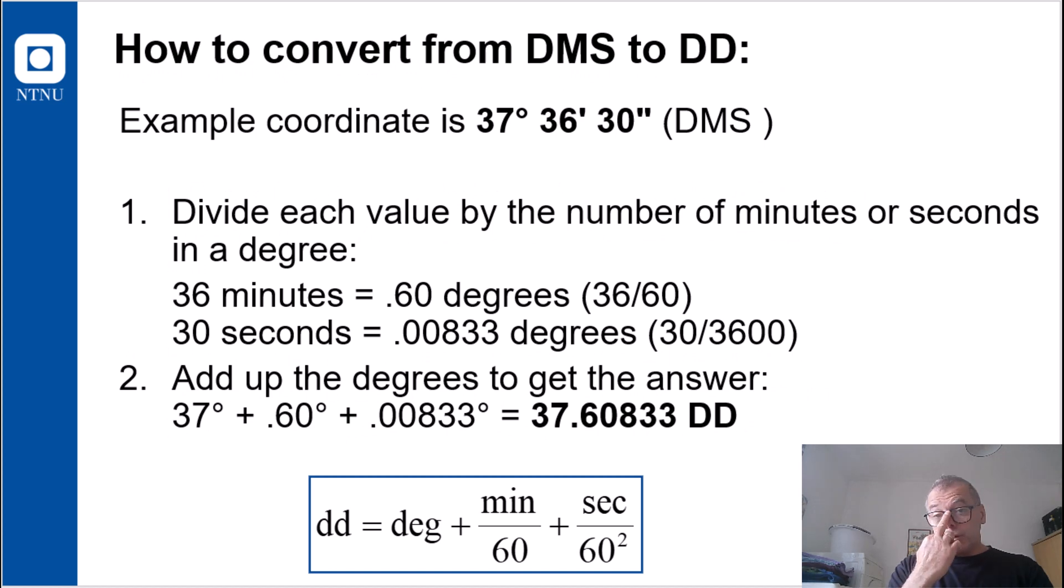So then how to convert from degrees minute second to decimal degrees? That is something the computer most often do for you, but it may also be needed if you need to register points from a non-digital source. We have an example here of 37 degrees, 36 minutes and 30 seconds. That's in the degree minute second format. And to get this into decimal degrees, you need to divide each value by the number of minutes or second in a degree.